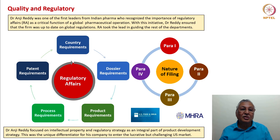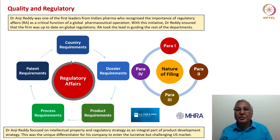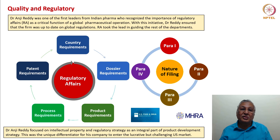Regulatory affairs did five things: it understood the country requirements and developed the dossier requirements, understood and developed the product requirements, set up process requirements, and analyzed patent requirements. Filings for the US FDA would be in terms of four paragraphs under the law: Para I, Para II, Para III, and Para IV. Para IV offers an excellent opportunity for generic manufacturers to challenge the patents of innovators, because the generic company can use several other characteristics of the product to invalidate big pharma patents — offering exclusivity of up to 36 months.